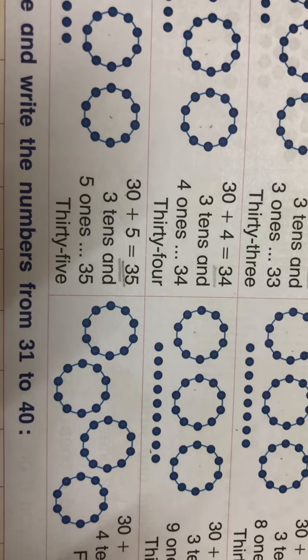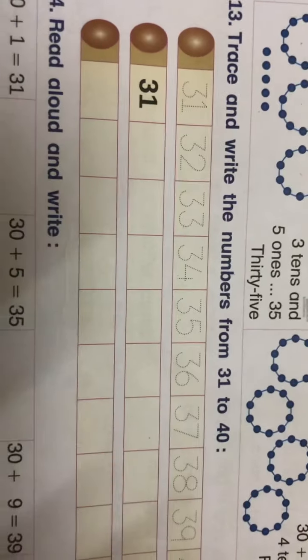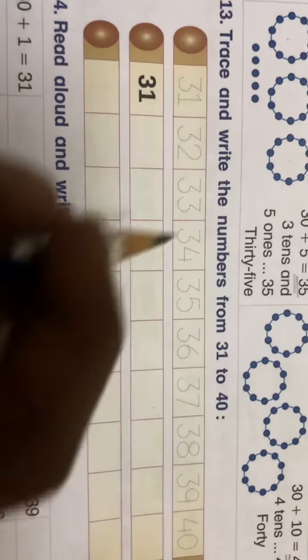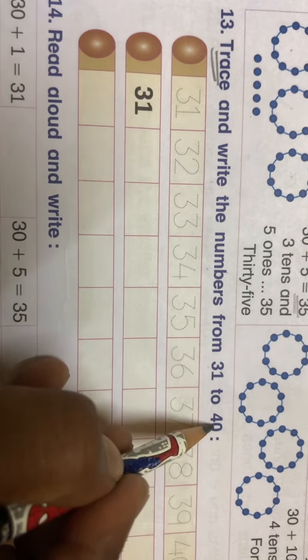Now here what you have to do - you have to trace and write the numbers from 31 to 40.